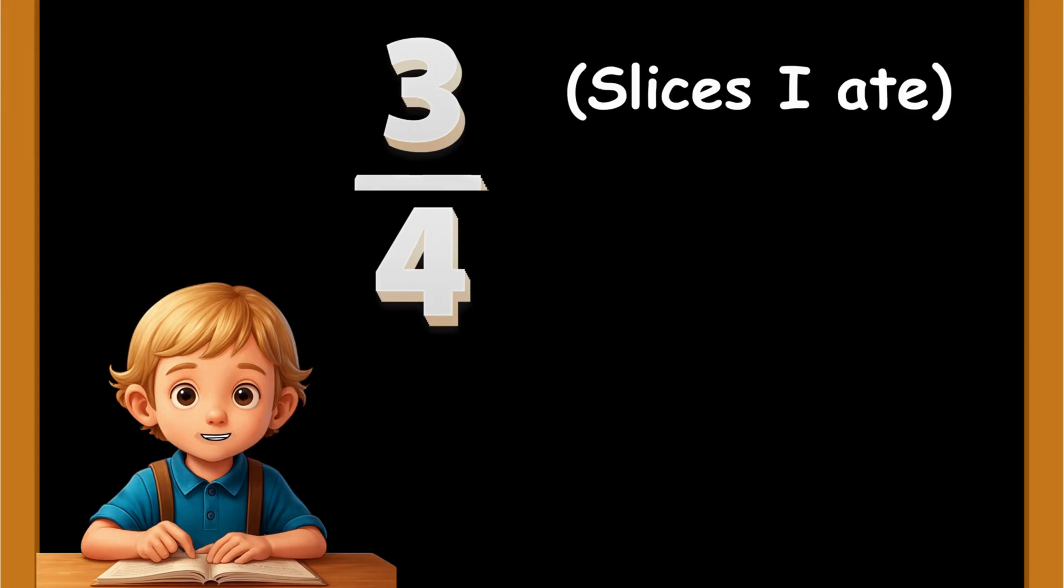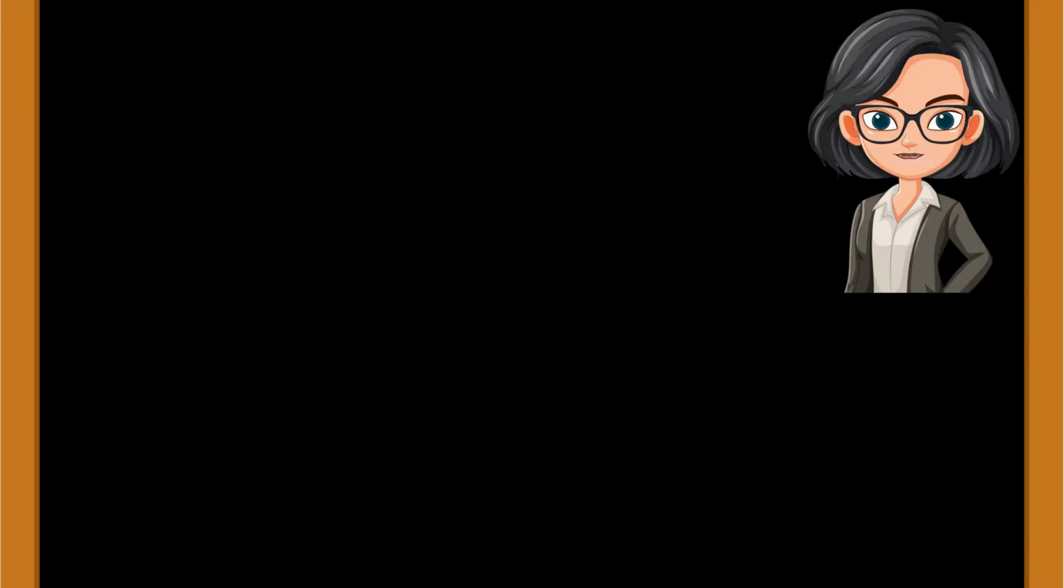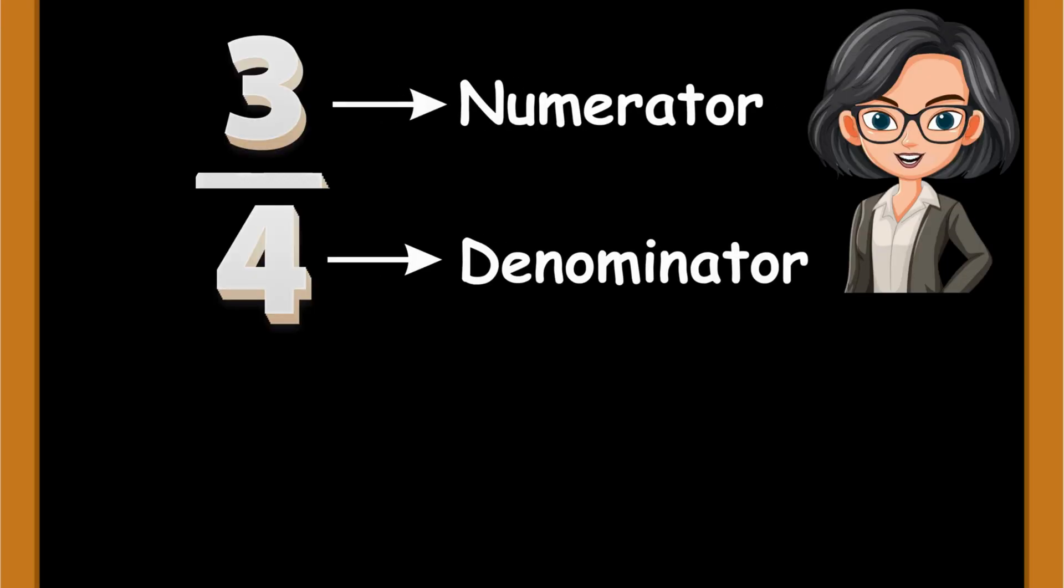So the top number tells how many slices I ate, and the bottom shows how many slices there were in total? Exactly. The top is the numerator, and the bottom is the denominator.